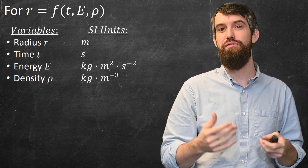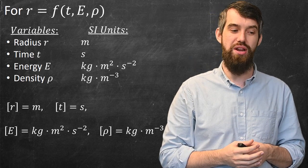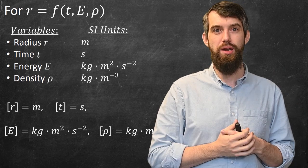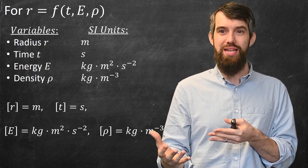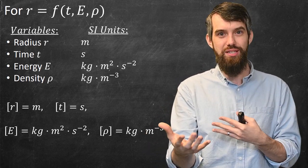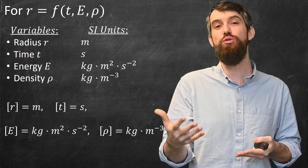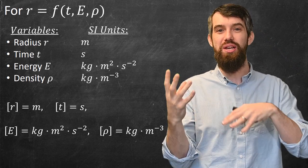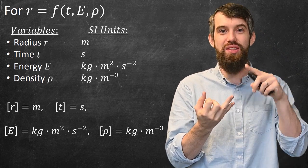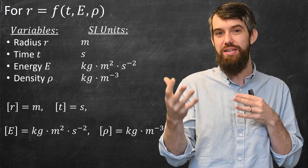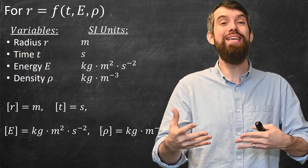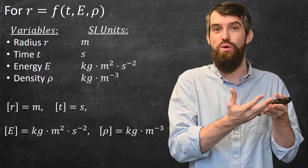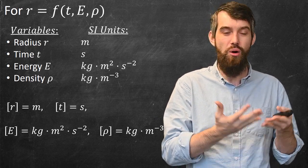Those are the dimensions of all the different properties, and if we use the square bracket notation, for example, we could say that the dimension of R is meters, and so on. Now, why are we doing this? The point is that I don't know what that function F is, but it has to have the right dimension. It has to have the right units. So what I want to do is figure out ways that I can combine the T, the E, and the rho, the time, the energy, and the density, such that what I get out of it is the right units. It's the units for meters for the dimension of the radius.